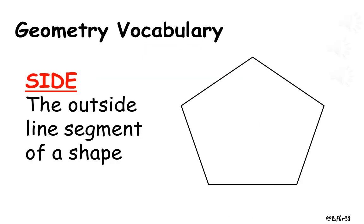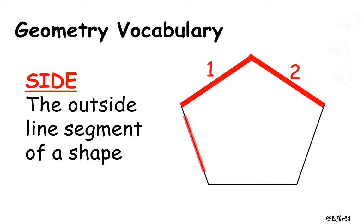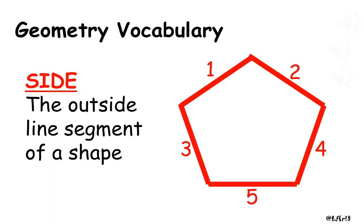A side is defined as the outside line segment of a shape. Let us count the number of sides for the figure below. We have five sides.